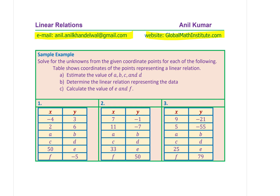Here is a question for you: solve for the unknowns from the given coordinate points for each of the following. We have three different examples here. The table shows coordinates of the points representing a linear relation, and what you need to find is A — estimate the values of A, B, C, and D.